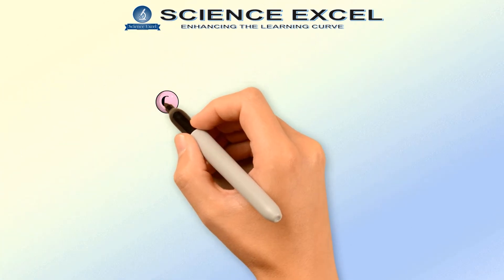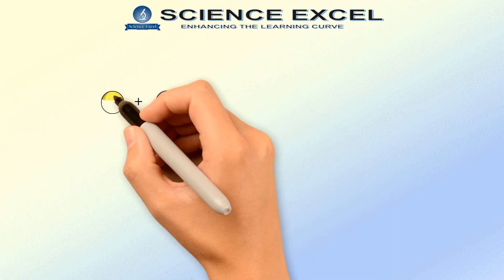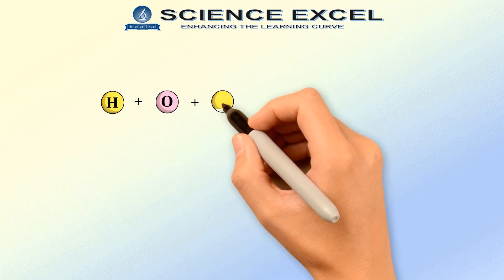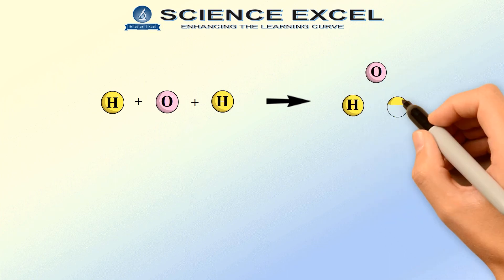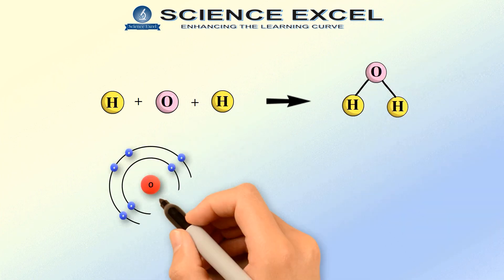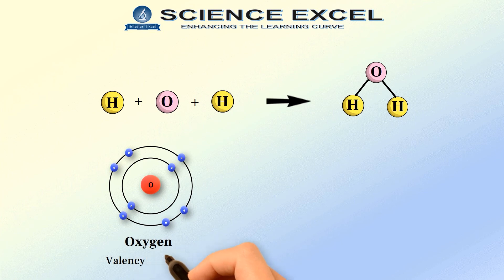Now, let's take the example of a water molecule. One atom of oxygen combines with 2 atoms of hydrogen to give 1 molecule of water. The valency of oxygen is 2 while that of hydrogen is 1.